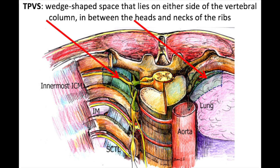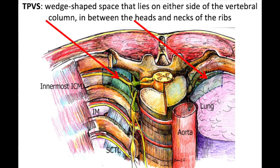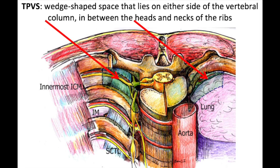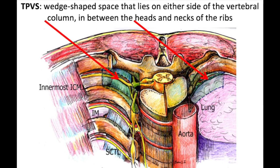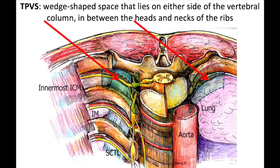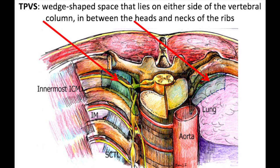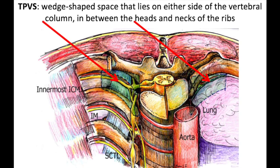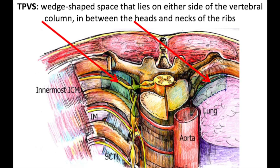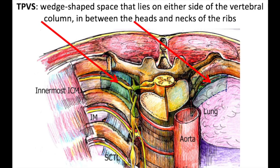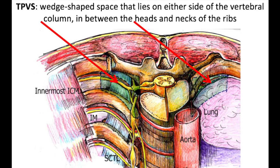The thoracic paravertebral space is a wedge-shaped space that lies on either side of the vertebral column, in between the heads and necks of the ribs.